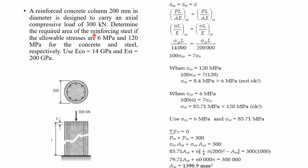Since sigma_concrete of 8.4 MPa exceeds the allowable 6 MPa, we try the other combination: set sigma_concrete equals 6 MPa and find the corresponding steel stress. Substituting into 100 times 6 equals 7 times sigma_steel, we get sigma_steel equals 85.71 MPa, which is less than the allowable 120 MPa. This combination is acceptable, so we use sigma_concrete equals 6 MPa and sigma_steel equals 85.71 MPa.